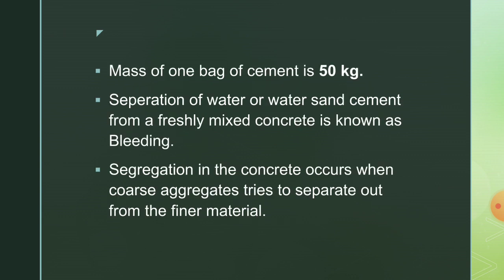The mass of one bag of cement is 50 kg. The separation of water, or water-sand-cement, from freshly mixed concrete is known as bleeding. In segregation it is the opposite — if the separation of coarse aggregate from the mixture takes place, then it is known as segregation.